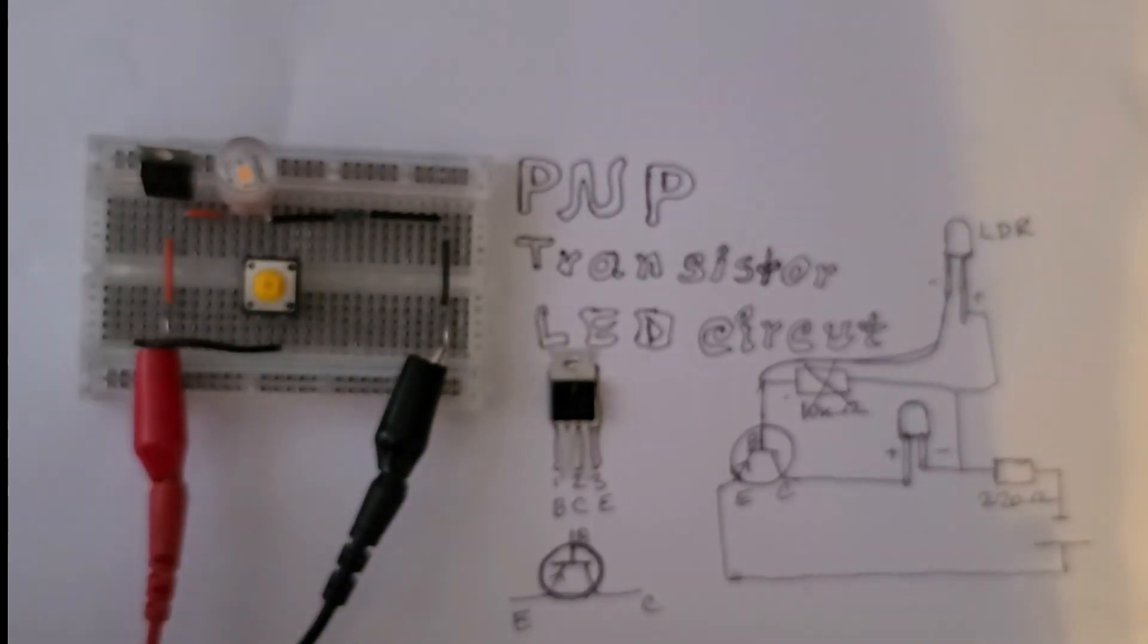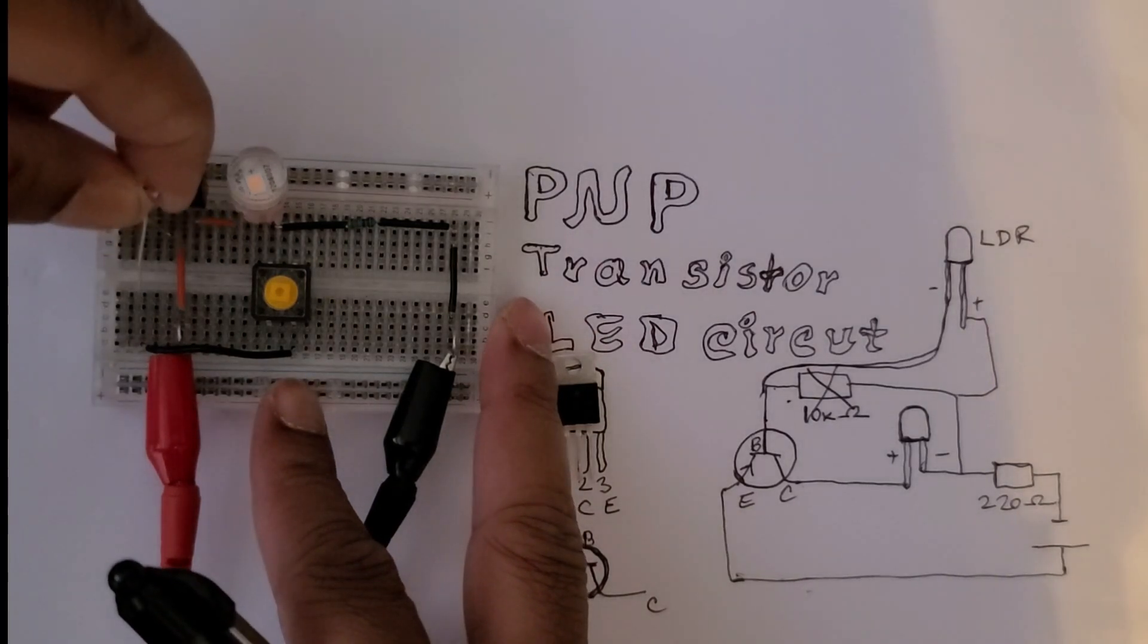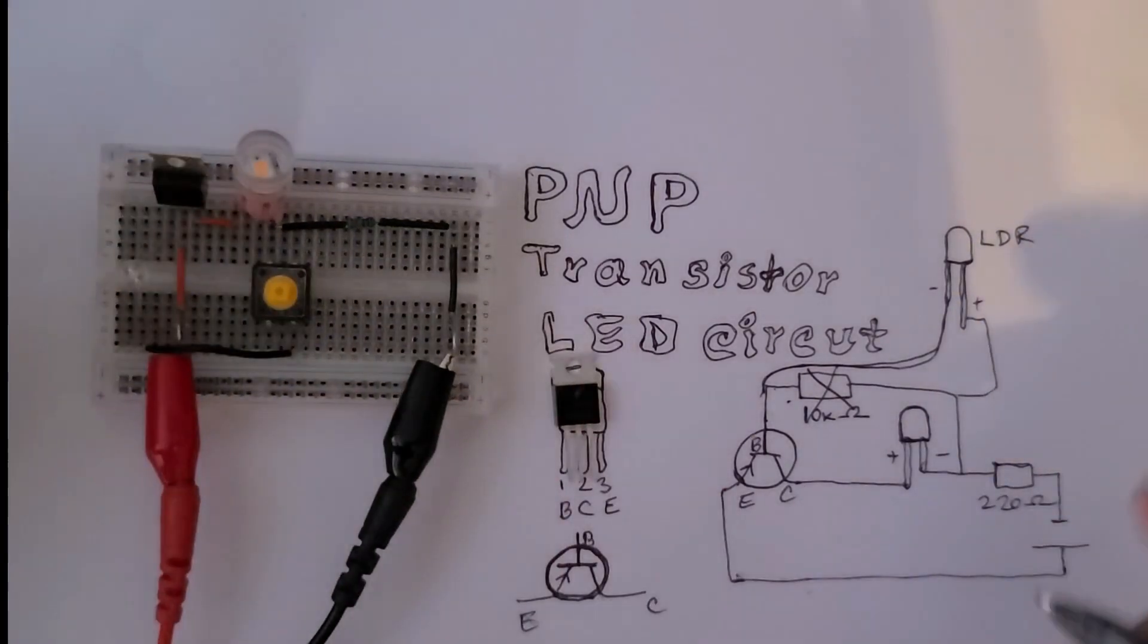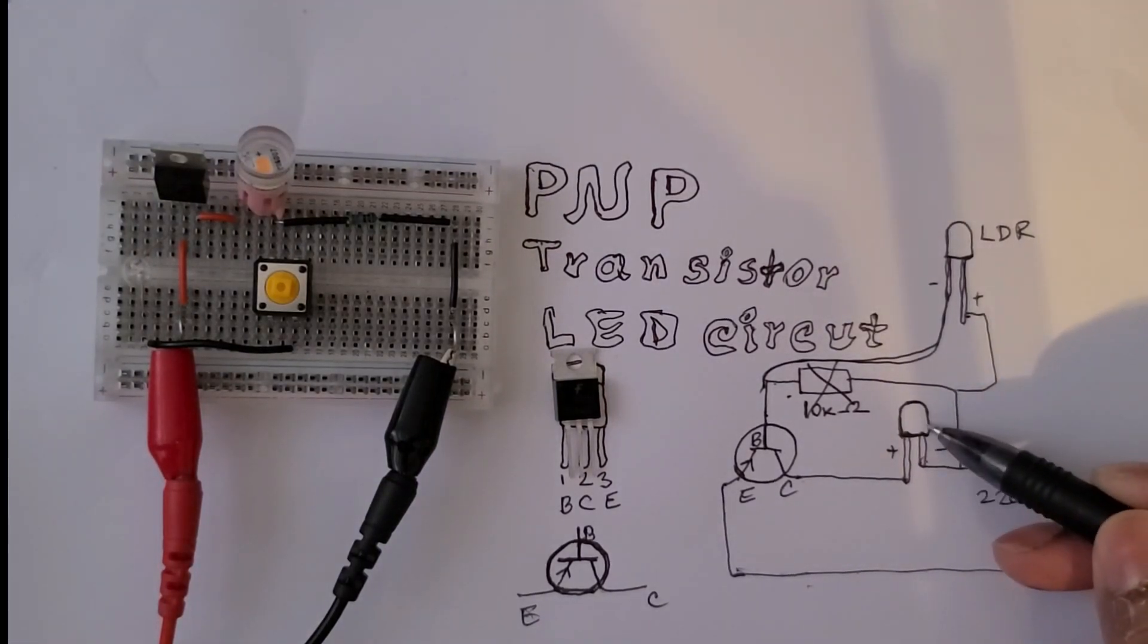I'll keep it aside and connect the positive side in this configuration. The positive side is connected with the ground of the LED.